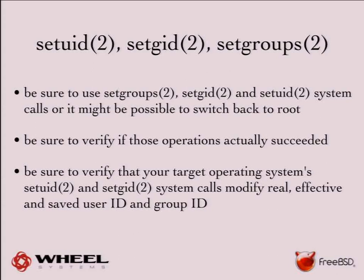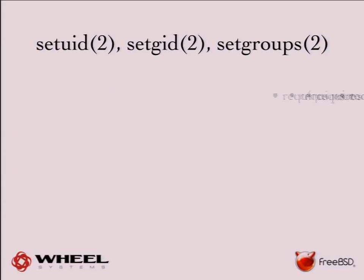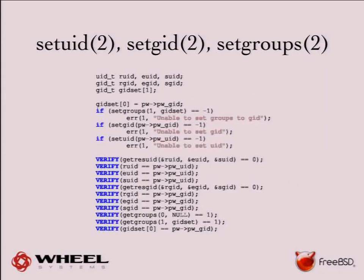Another problem is resource limits: for example, a user cannot create more than a certain number of processes. So if you try to change your user ID, you may hit resource limits. Also, on some operating systems, setUID may not modify all of real, effective, and saved user ID and group. And of course, the biggest issue is that it requires root.